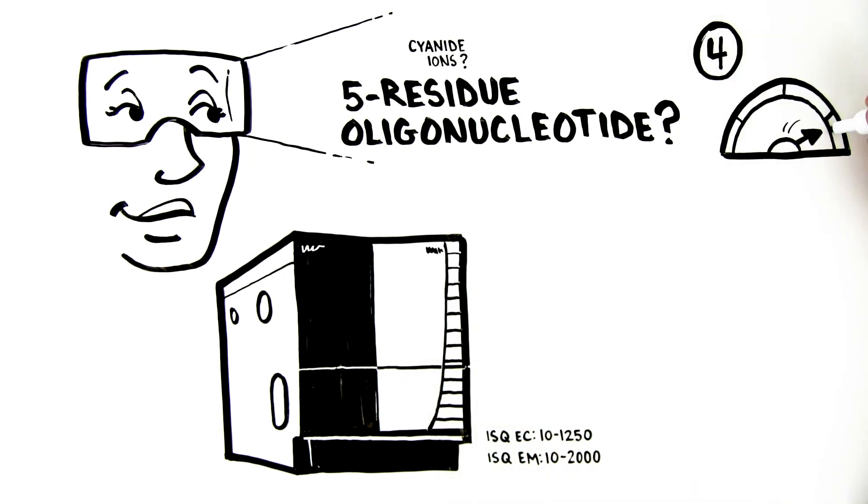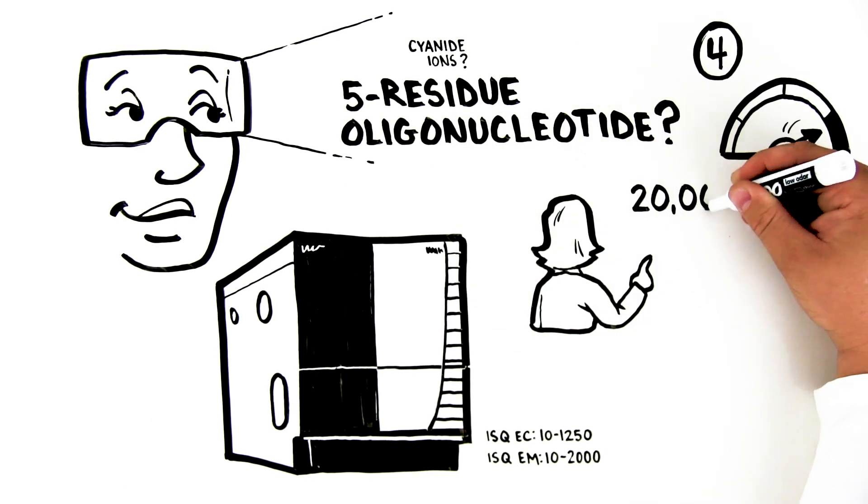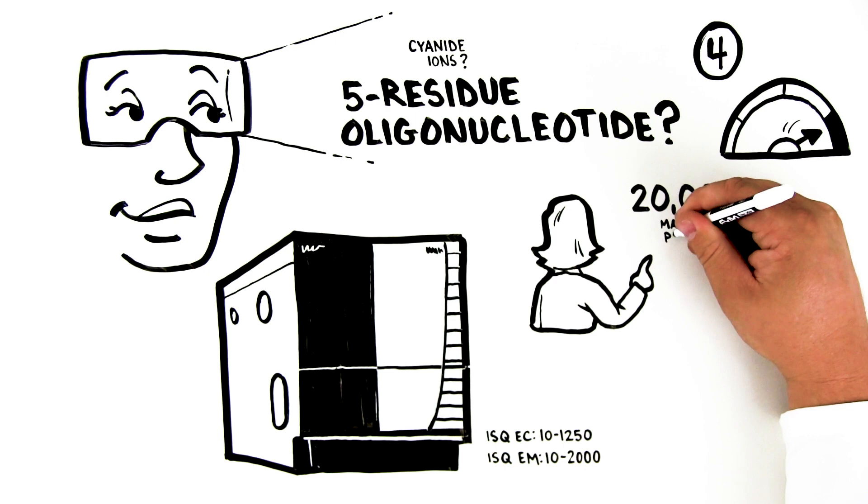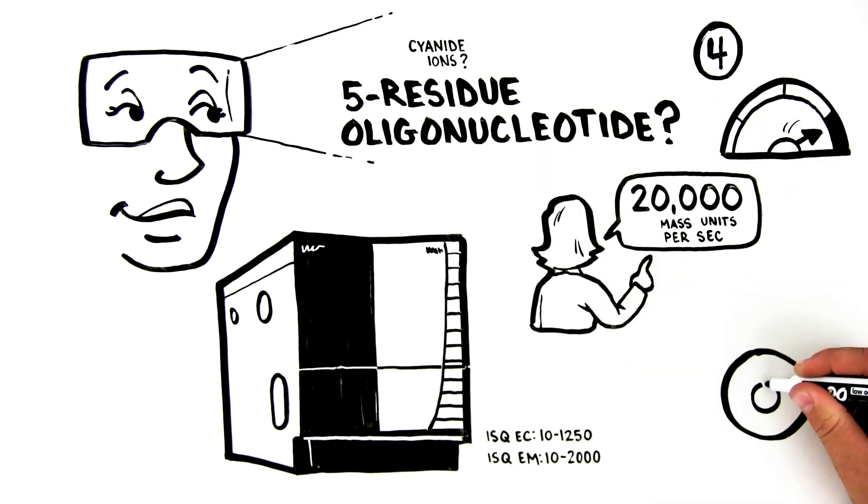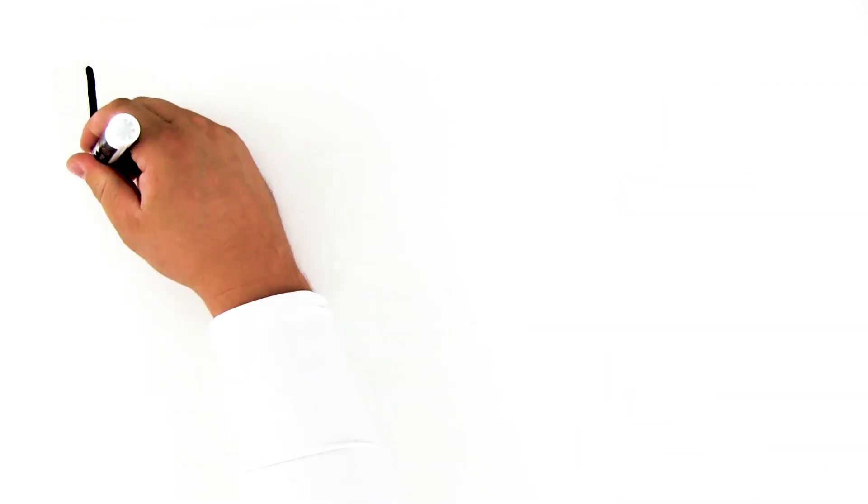Fourth, there's scan speed. In order to characterize a UHPLC separated peak properly, Jenny wants 20,000 mass units per second. A slower scan speed will mean she may not be able to get accurate quantification.